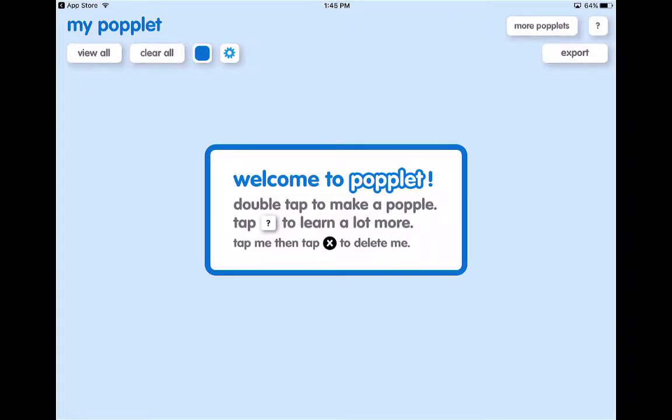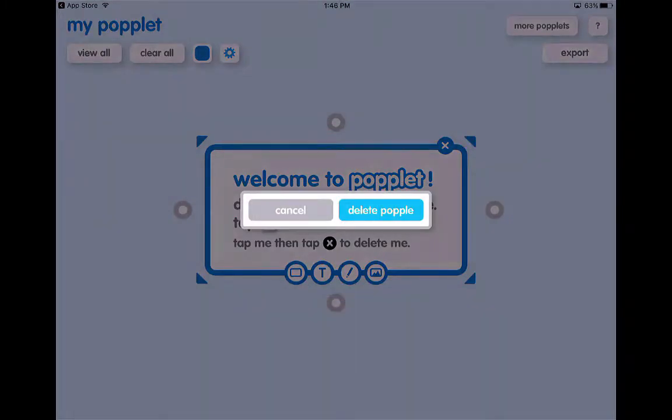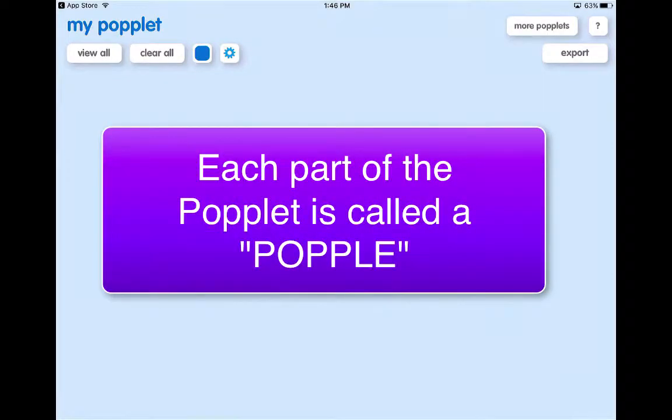So when you first open up the app, it's going to give you the welcome screen. And the easiest thing to do here is just to actually exit out of this, and we're going to tap this and delete this. So each of the bubbles, they call Popples, so it's the same thing as just one leg of the concept map or mind map or whatever you want to call it. They just give it a different name.